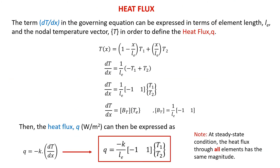The term DT over Dx in the governing equation can be expressed in terms of element length and the nodal temperature vector in order to define the heat flux. From our temperature function that we derived previously, we can obtain the temperature gradient DT over Dx by differentiating the temperature function. This gradient can be derived in matrix form and simplified as DT over Dx equal to matrix B times matrix T, where matrix B is given by this equation. Then the heat flux can be expressed as shown in the equation.